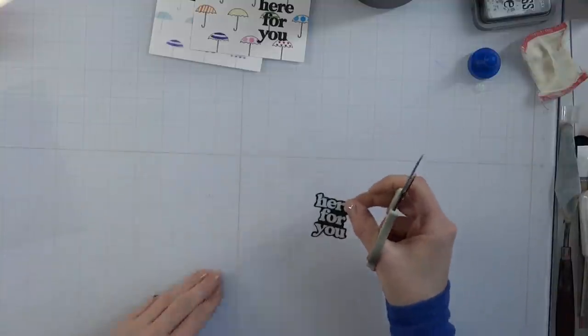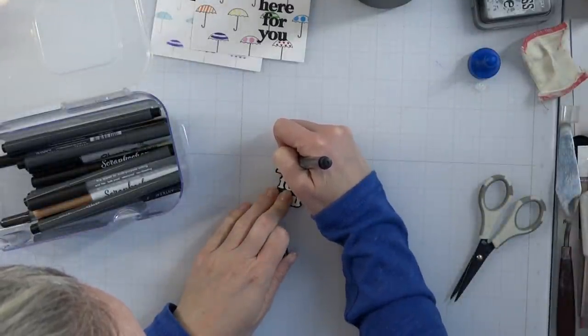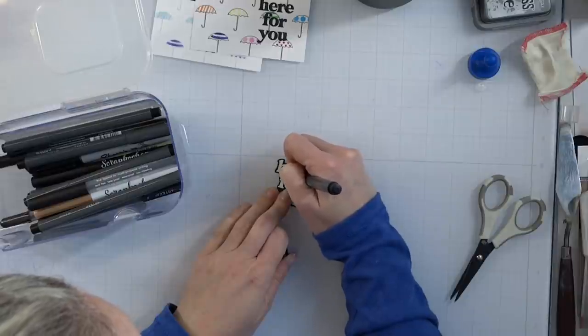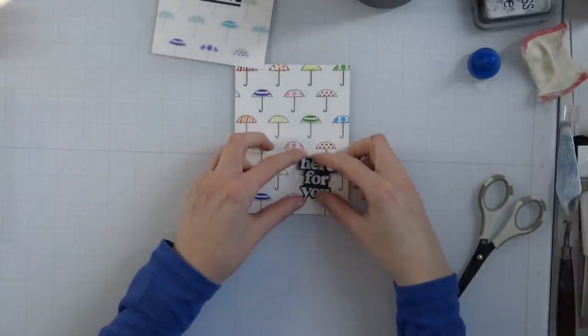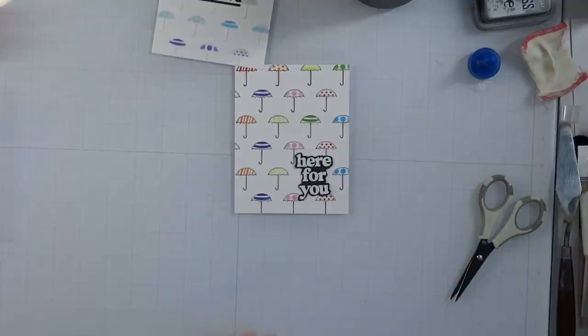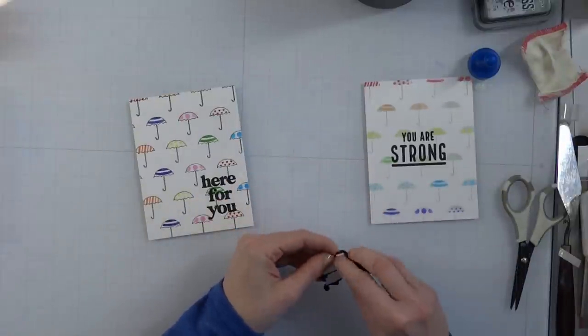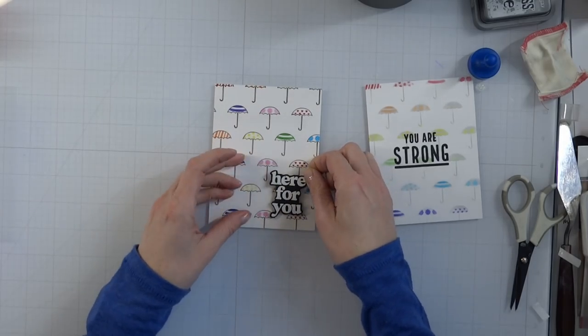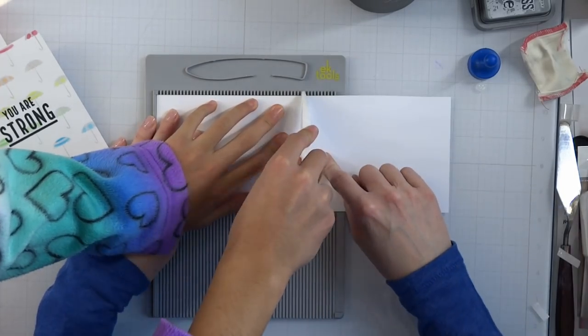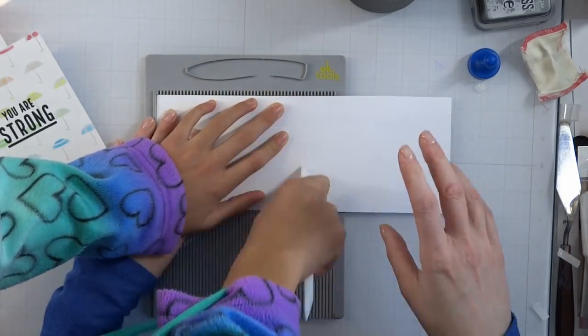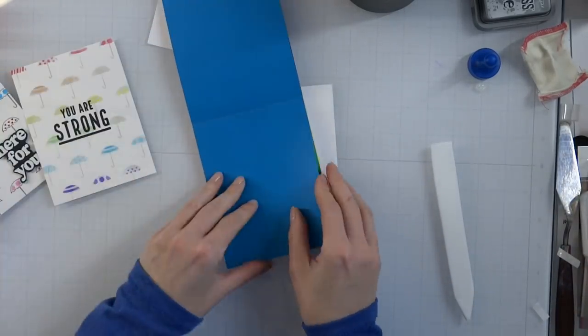This microfiber cloth I'm using is from the auto section of the Dollar Tree, highly recommend. I am bubble cutting my sentiment, that's just a Mary-ism for cutting around the words in the shape of the words. I think it gives it an entirely new look. Here's another tip: you know how we use the white gel pen to hide some of those marks? You can use a black marker to hide any mistakes on your black cardstock as well.